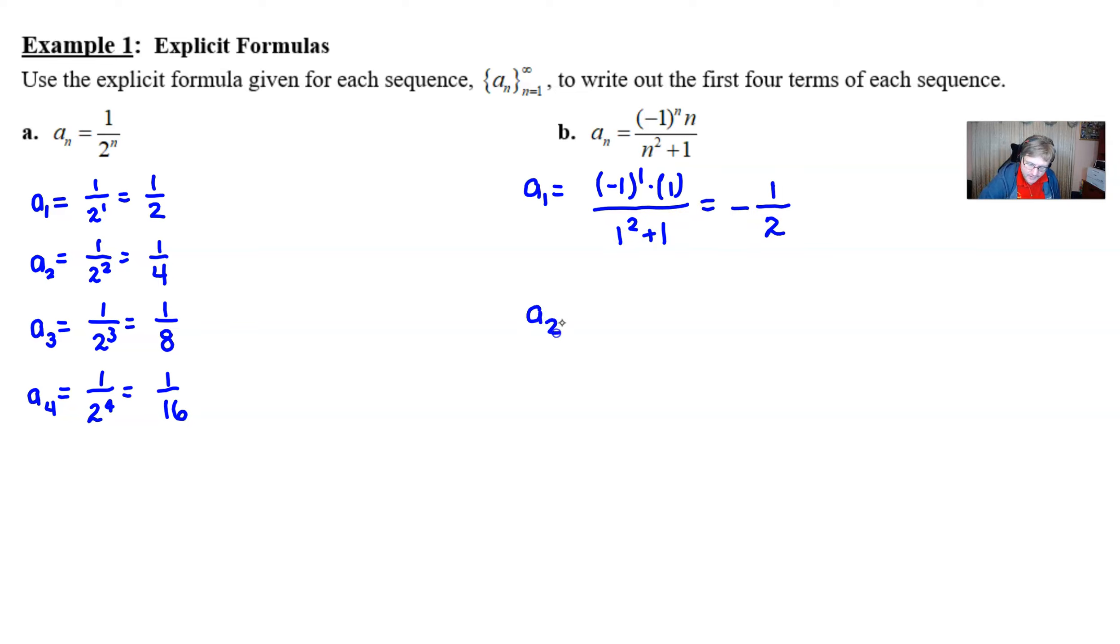Now, if you try to enter 2 in for the n, we have negative 1 squared times 2 all over 2 squared plus 1. Now, you're going to notice something very interesting here. Now, the negative 1 squared is going to result in a positive 1 times our 2 is 2. So now this is going to be a positive term altogether, and the denominator is going to end up being 5.